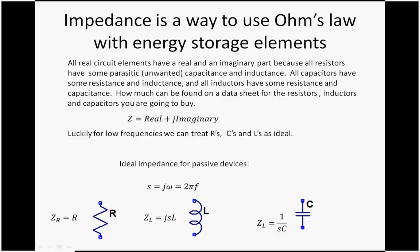All real circuit elements have a real and an imaginary part because all resistors have some parasitic, in other words unwanted, capacitance and inductance. All capacitors have some resistance and inductance, and all inductors have some resistance and capacitance.